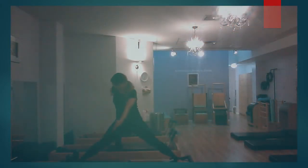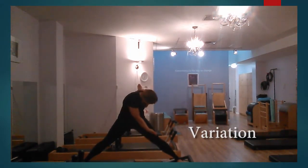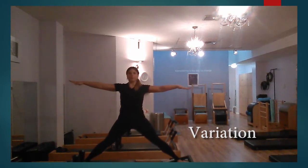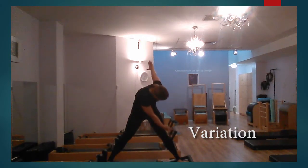The variation in side splits is done only when the client can perform the ideal with proper placement of the spine and pelvis to avoid balance issues. The carriage is held in the out position, and a twist right and left is added, then repeated when the carriage is in.